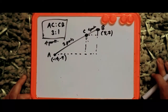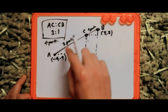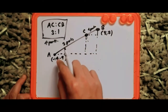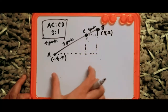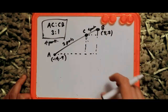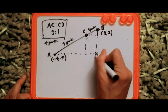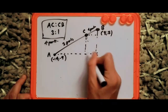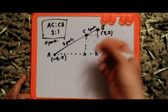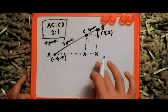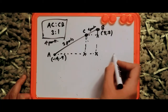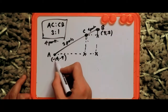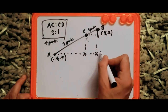The key thing to notice is that AC is three times the length of CB, so the distances on each axis should also be in a 3 to 1 ratio. On the x-axis, minus 14 is here and it goes all the way up to 8. Since this is on the same line as 8, it's going to be 8-something.